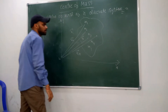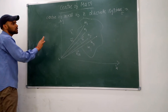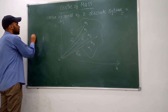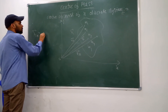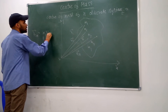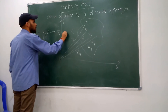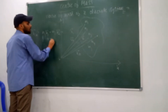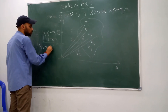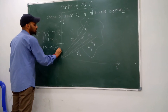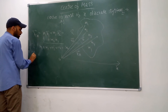Up to N particles — how do we find the center of mass of an N discrete system? The center of mass of N discrete systems is found by: RCM equals M1·R1 plus M2·R2 plus M3·R3, up to MN·RN, divided by M1 plus M2 plus M3 plus M4, up to MN.